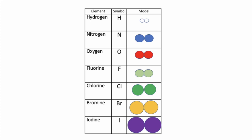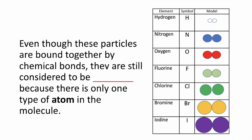This picture shows examples of some common elements that typically exist as molecules. Even though these particles are bound together by chemical bonds, they are considered to be elements because there is only one type of atom in the molecule.